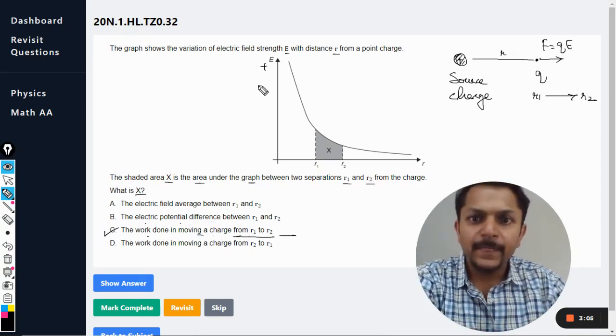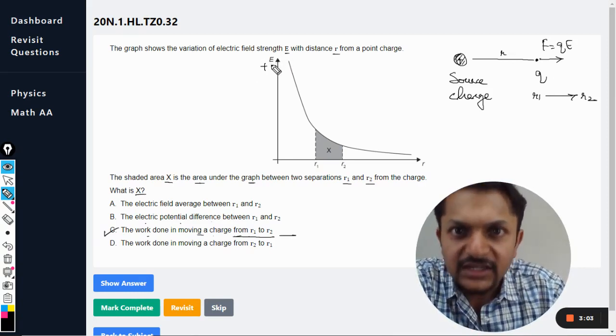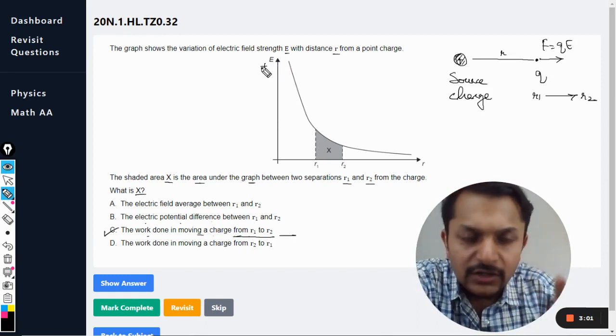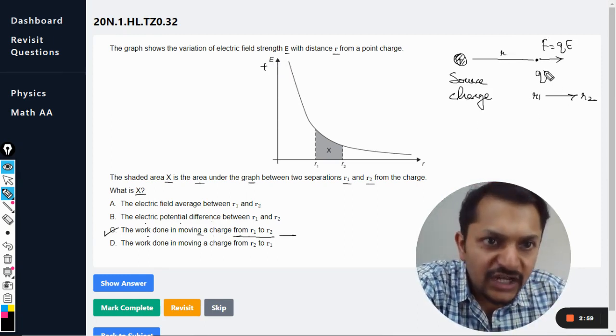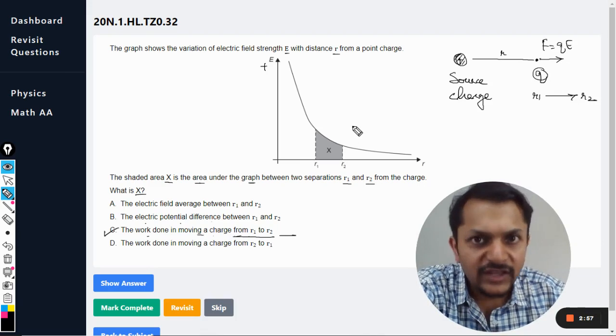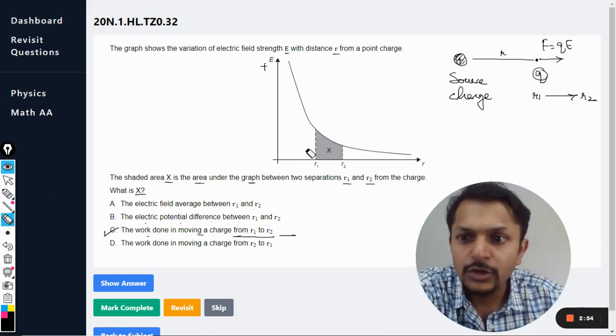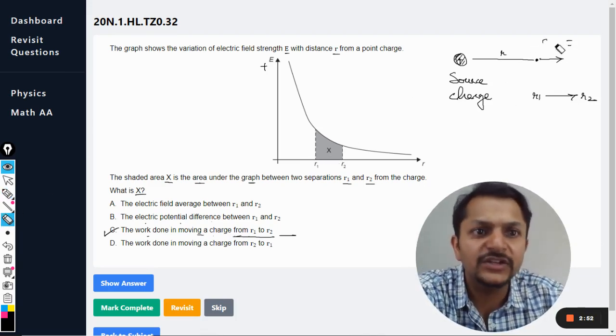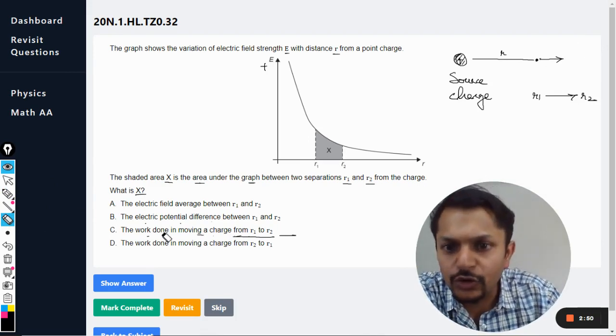But the problem is this graph talks about E, it is not talking about F. This charge q is not given to us in the question. They are only talking about electric field, so q is not present. So there is no question of F, and if there is no question of F, there is no question of work done.